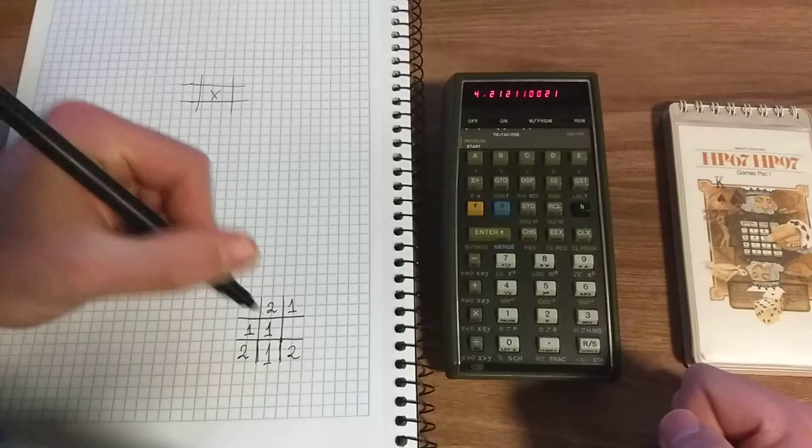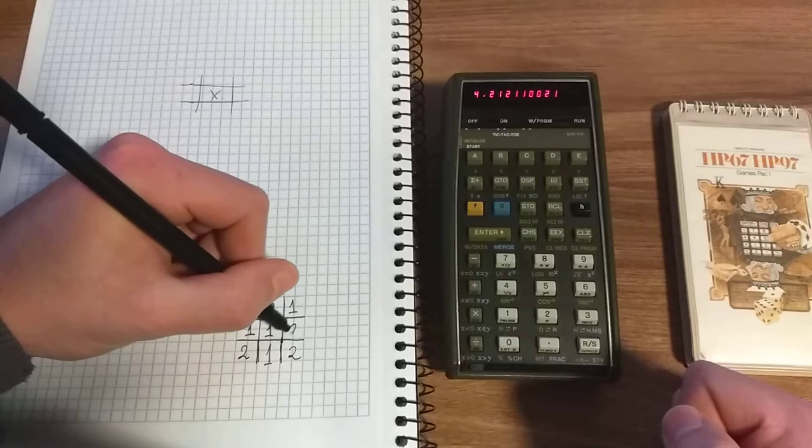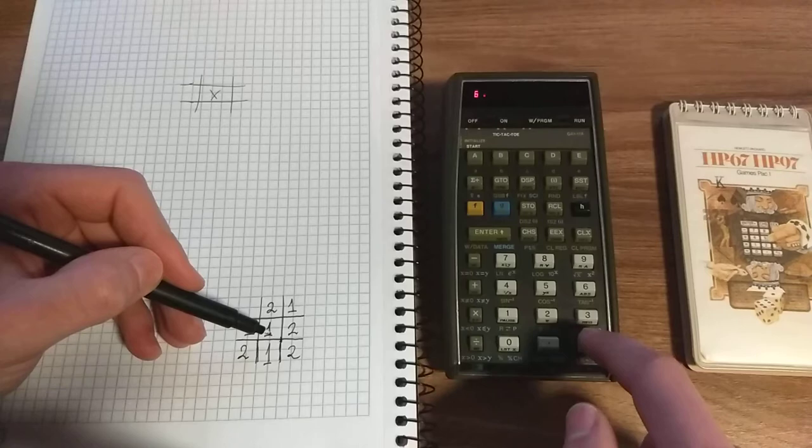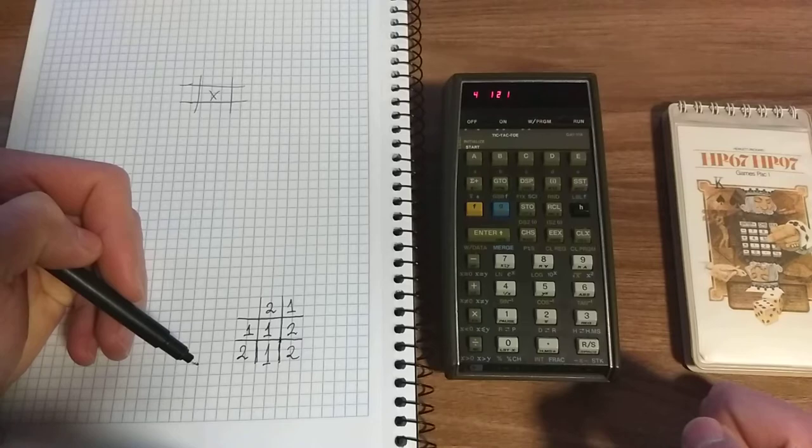The calculator's next move is position seven, so this is its move.